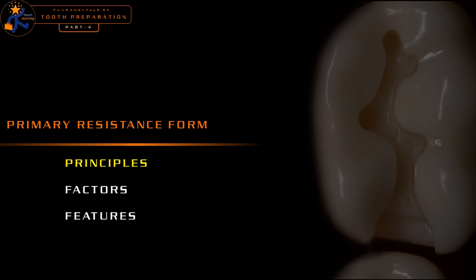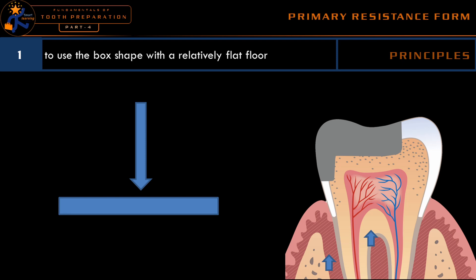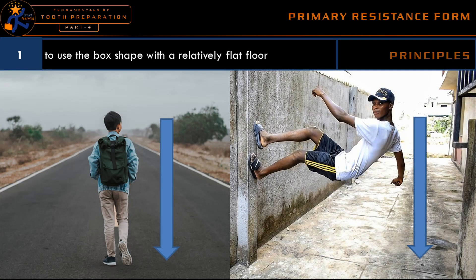We could study primary resistance form under the following headings. The first and foremost principle is to use the box-shape cavity preparation with a relatively flat floor. Whenever a masticatory load is delivered along the long axis of the tooth, the relatively flat floor and box-shaped cavity preparation will withstand the forces. If we are not providing a flat floor and a box-shaped cavity, the tooth will have insufficient strength to withstand forces acting along the long axis.